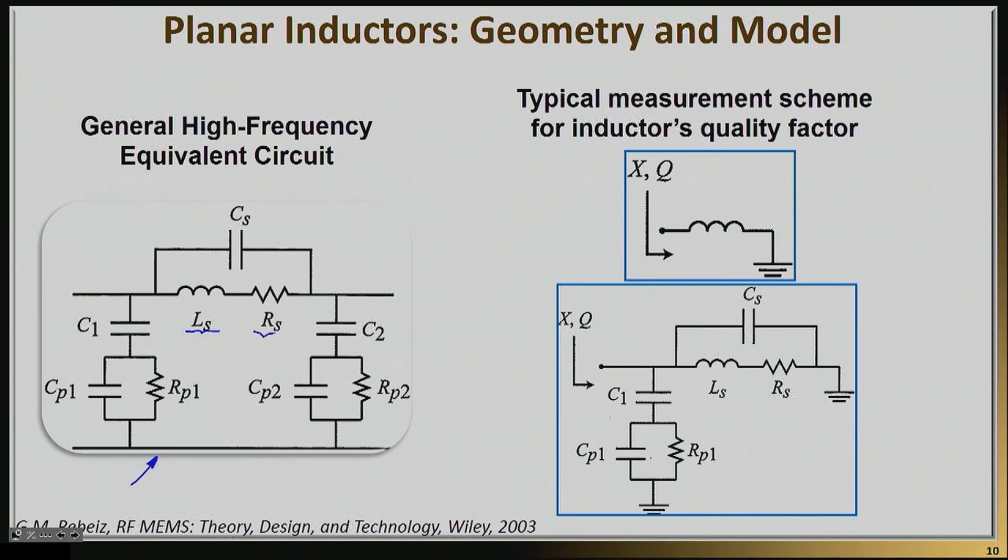There is some type of resistance, RS. This mostly represents the resistance of the metal of the inductor. There is some type of parasitic capacitance, CS, that tries to capture the capacitance between the windings, the turns of the inductor. And then there are additional parasitic capacitances that are essentially going through the substrate.